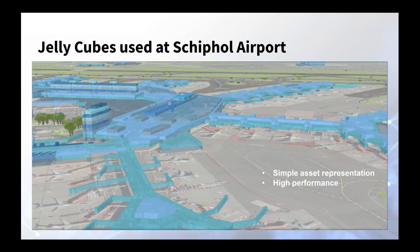An example of jelly cubes in use — I was gratified to see this since I wrote the article on how to do this about nine years ago. Schiphol Airport uses it as a basic space planning overview. You can see a screenshot example here. It's quick, simple, has fairly high performance, and gives people a good representation of what parts of the airport are being used for.